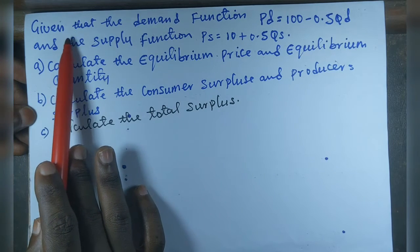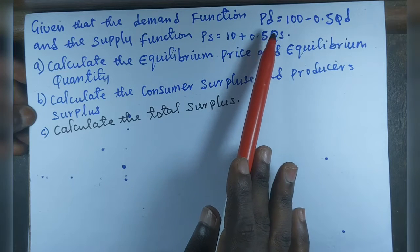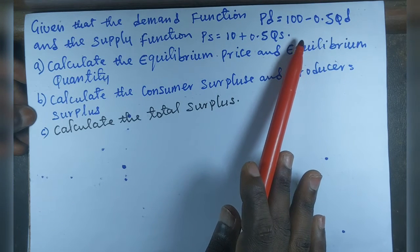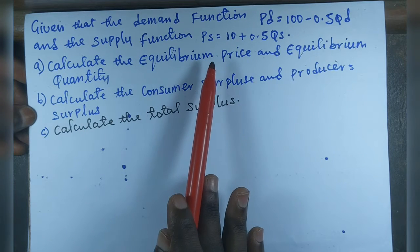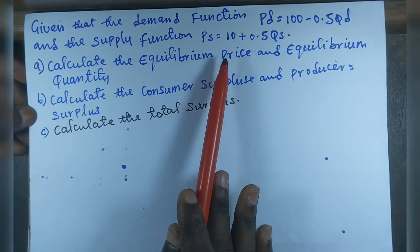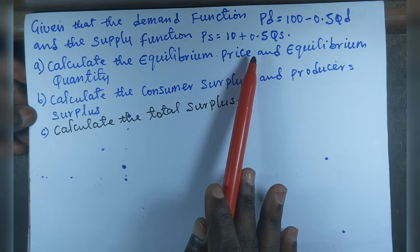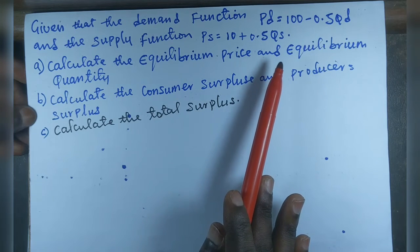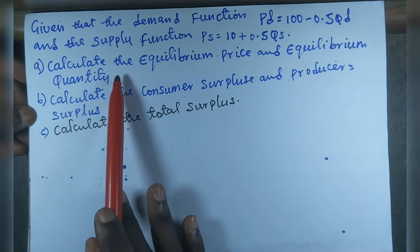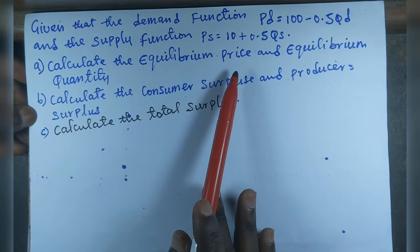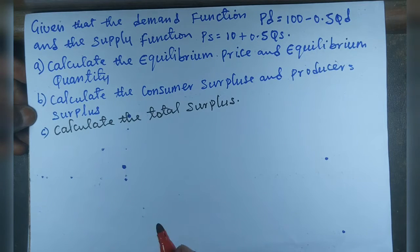We start with the equations given. The demand function is PD equal to 100 minus 0.5Q, and the supply function PS is equal to 10 plus 0.5Q. The problem requires us to calculate the equilibrium price and quantity.